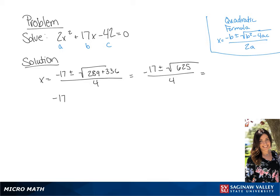The square root of 625 is 25, so we're going to get negative 17 plus or minus 25 all over 4.